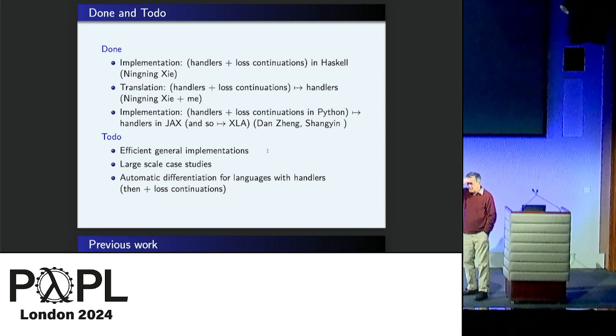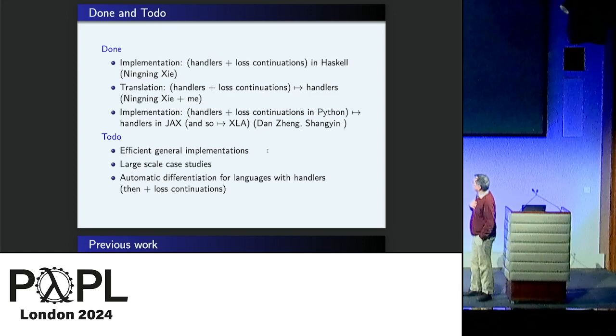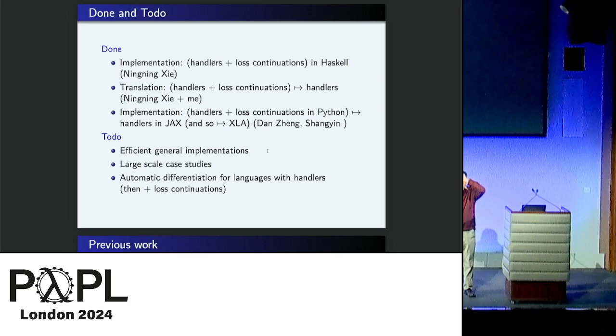And given that there's no work being done in efficiency at all, hardly, that's cheating. So that's good. So it might become real. So we'd like efficient general implementations, like large-scale case studies. And one thing that we skated over was it just magically said that we'll do gradient descent, which uses differentiation. But there's a real question, how do you integrate differentiation with handlers? And how do you do that efficiently? So that would be really nice to understand.